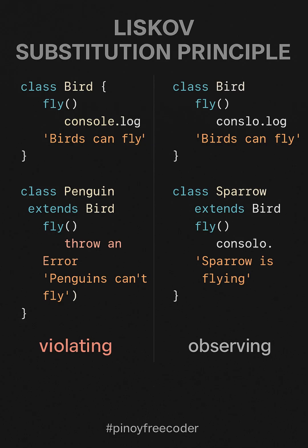The Liskov Substitution Principle, LSP, states that derived classes must be replaceable with their base classes without altering the behavior of the program. On the left, we have an example that breaks LSP. Here, the penguin class inherits from bird, but it doesn't behave like a bird should. While bird can fly, penguin cannot, throwing an error when attempting to fly. This violates LSP because, as a derived class, penguins should be able to perform the same behavior as its base class bird. Since it doesn't, it's not a valid substitution.